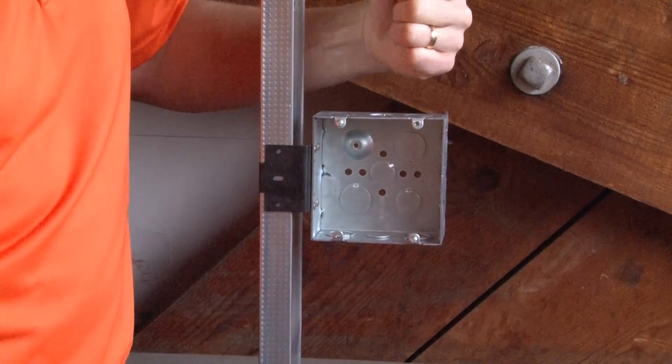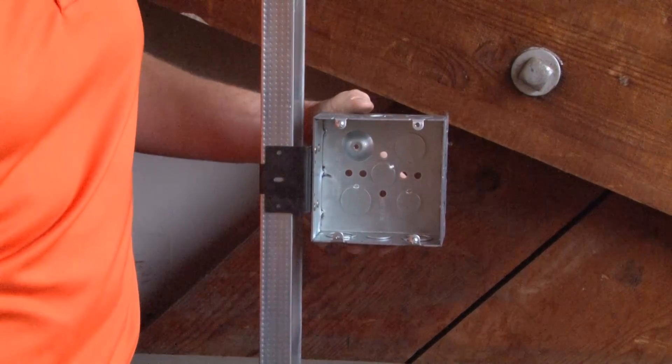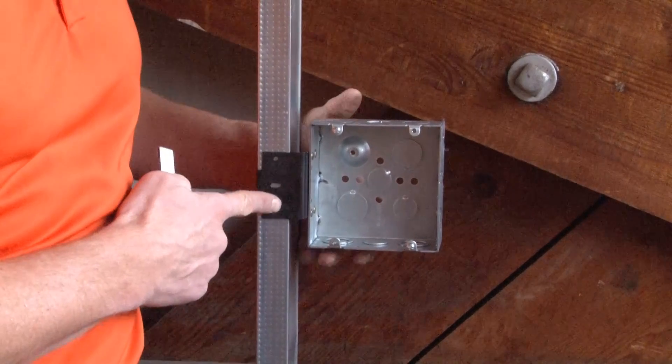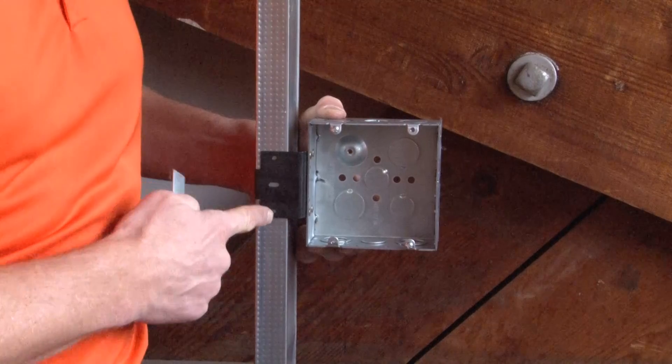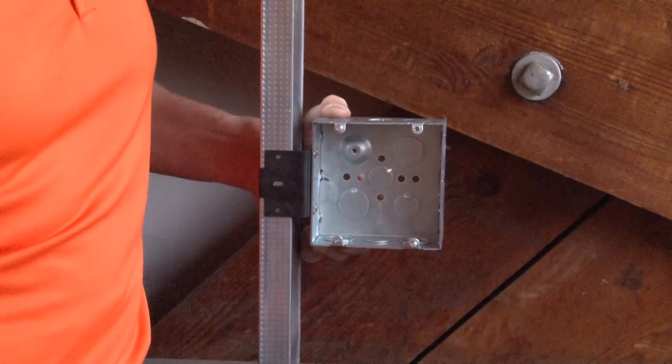Once your conduit is in place and your connector is in place, you should then secure this box to the stud using the screw holes provided on the face of the stud.